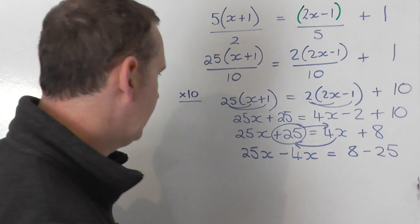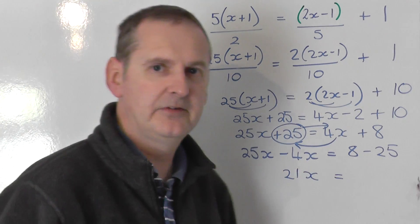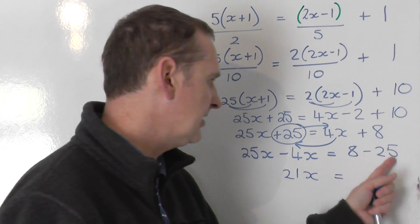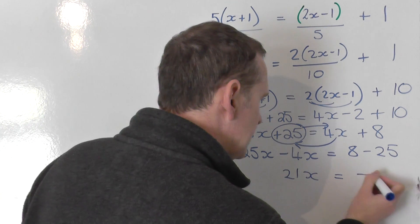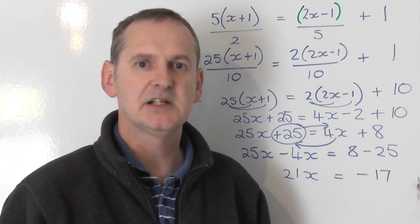Let's tidy up. 25x take away 4x is 21x equals, be careful with the right-hand side, you've got 8 minus 25. That is a negative, a negative's win, by 17. So negative 17 on the right-hand side.